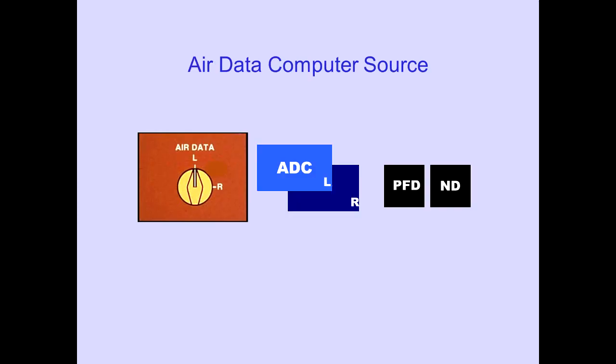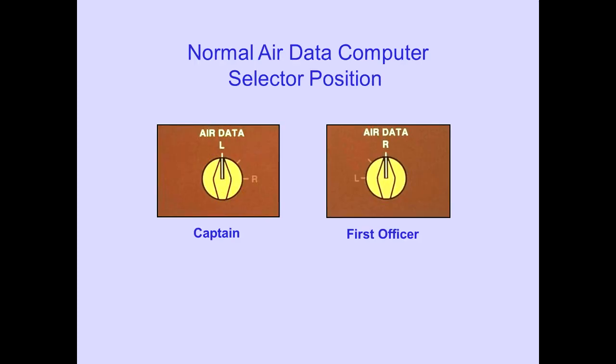The Air Data Source selector is used to select which air data computer, ADC, provides information to the PFD and ND. The left or right air data computer can be selected. Normally, the Captain's air data selector is on the left source and the First Officer's selector is on the right source.